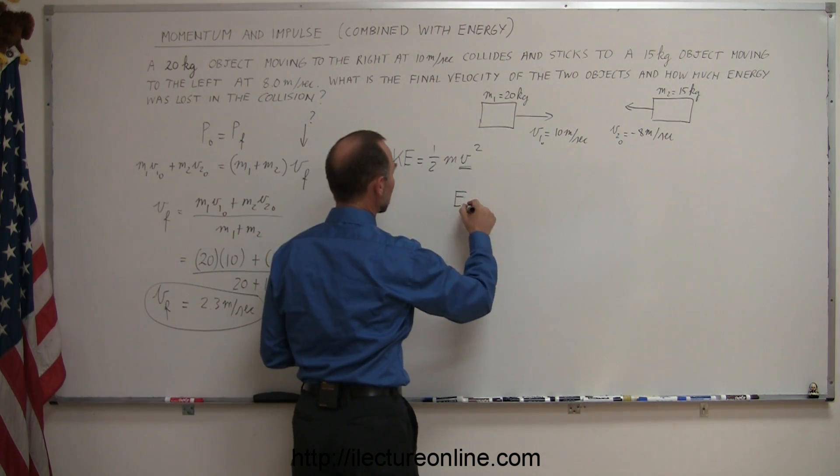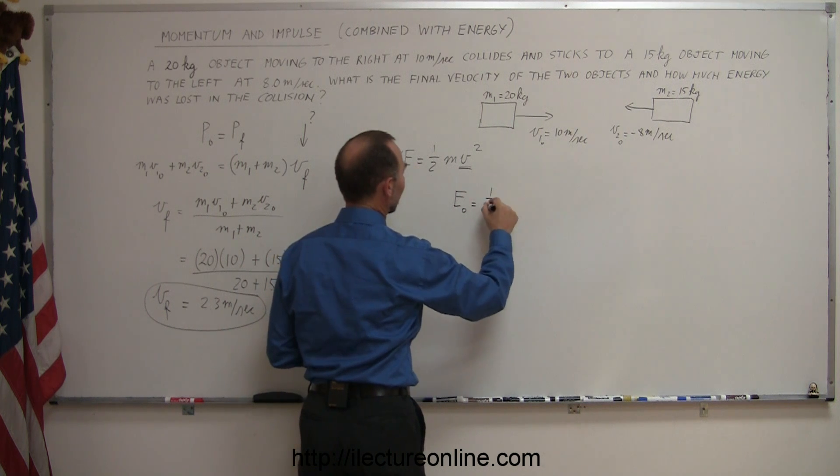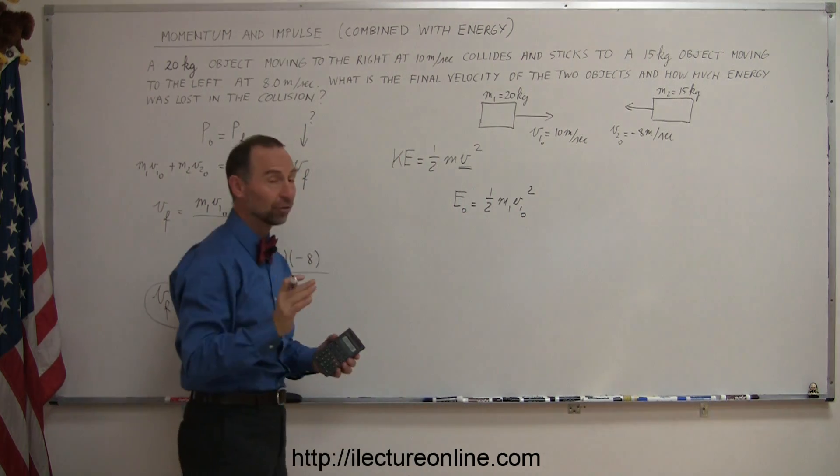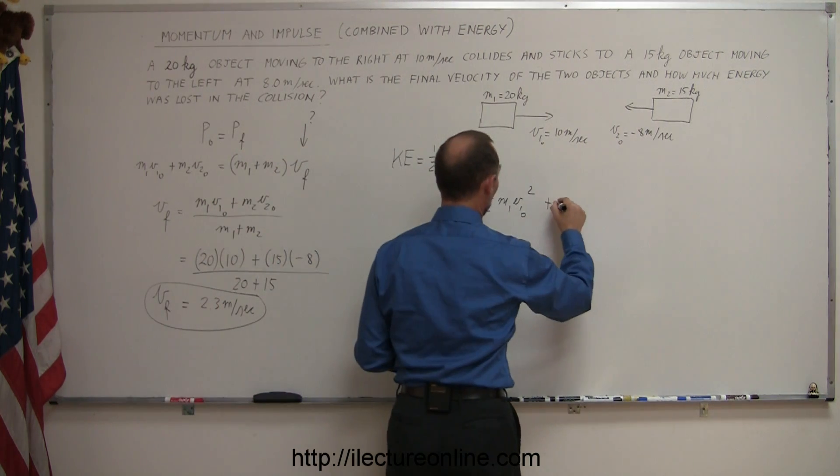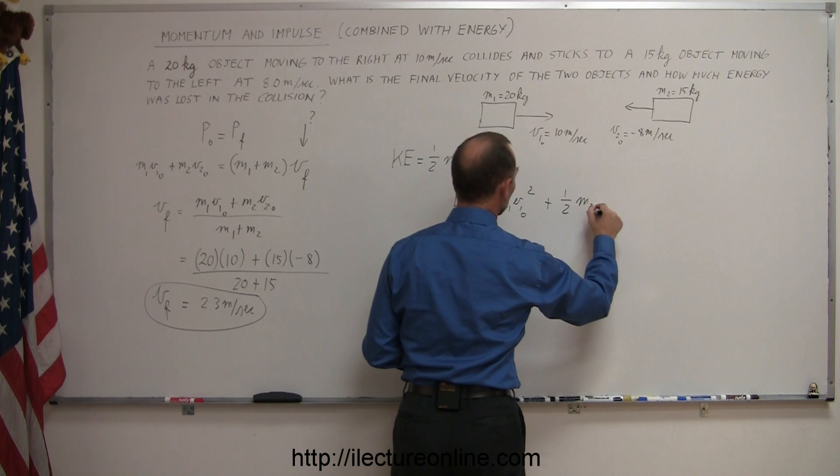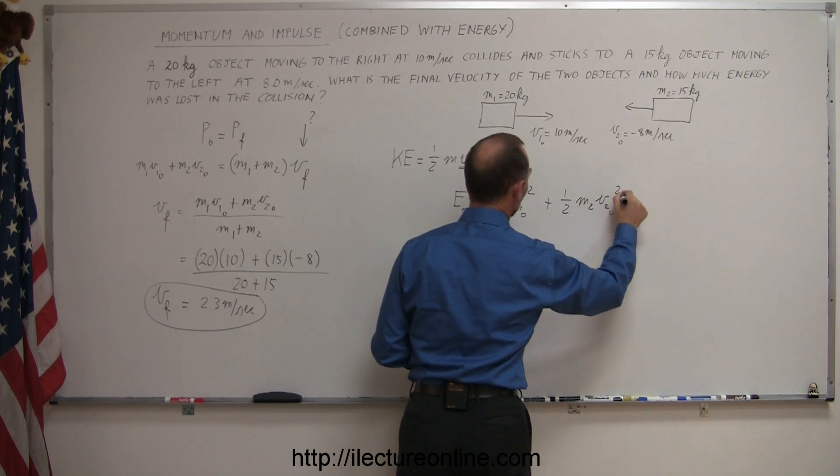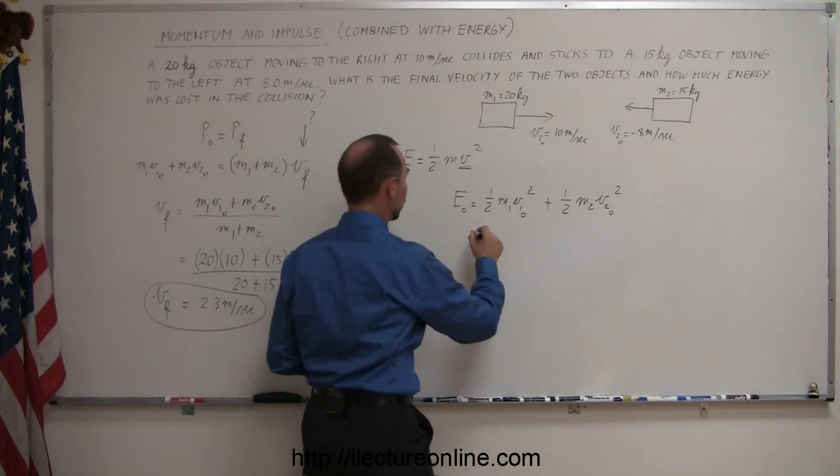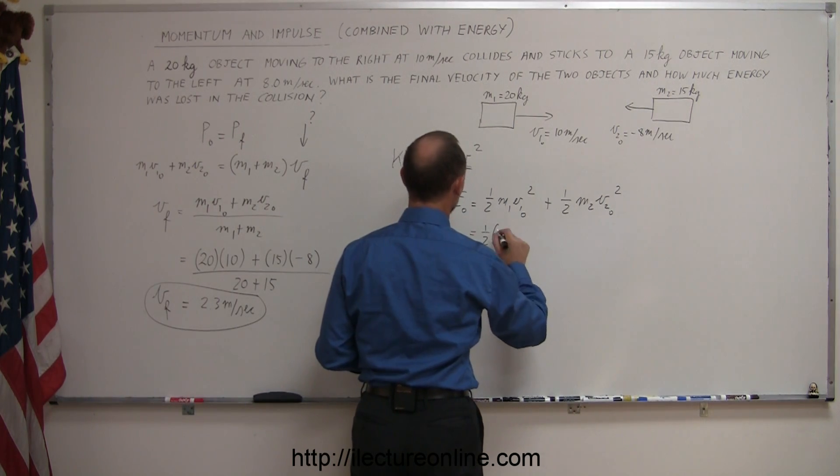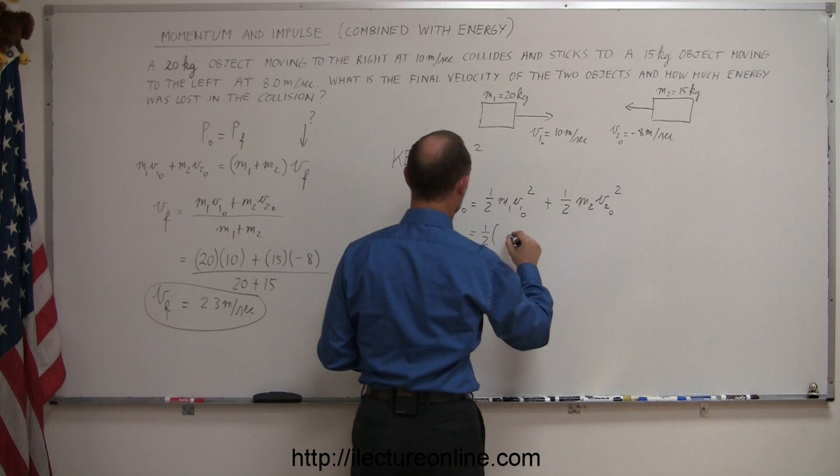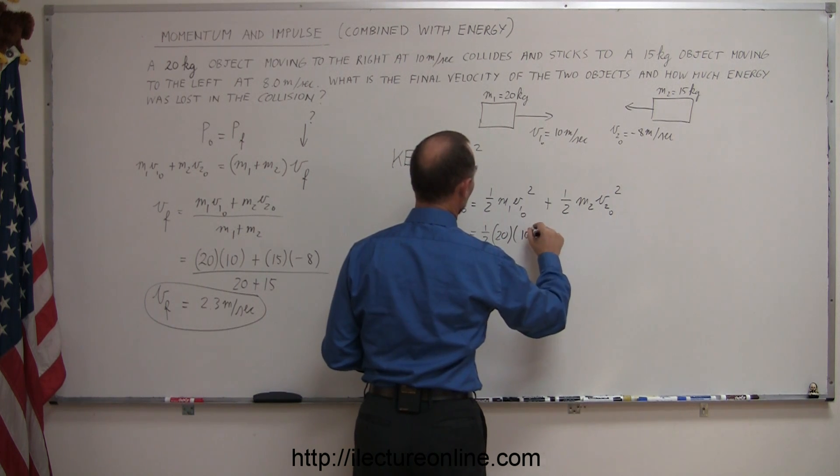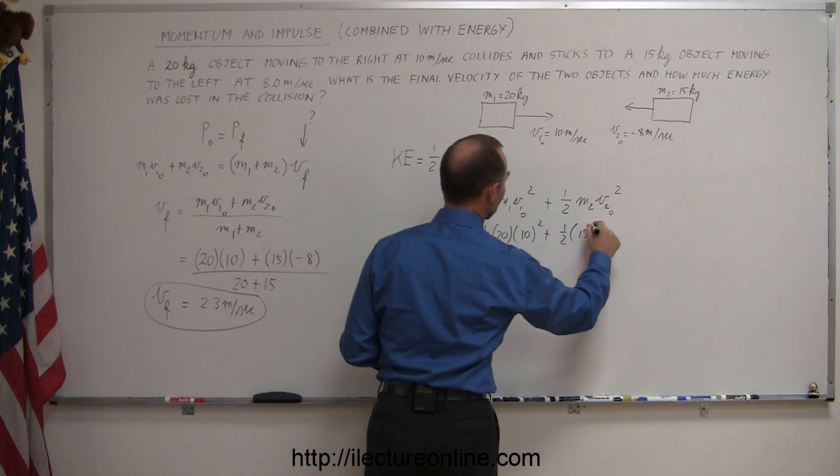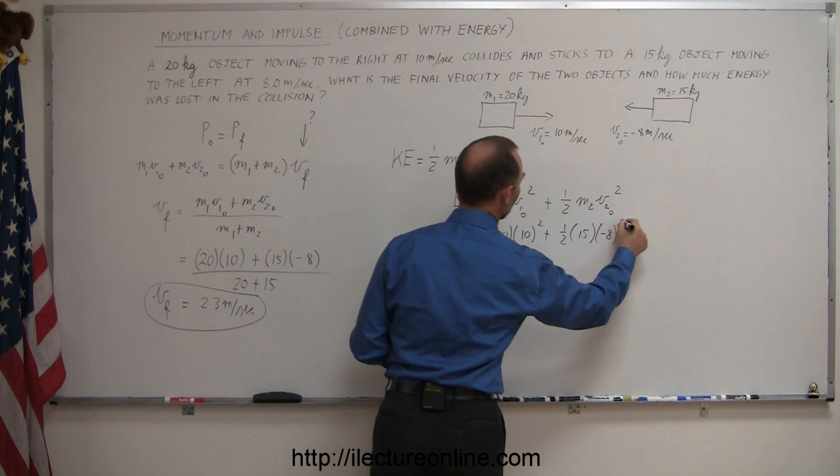So we have to add up the energy before, so energy initially is equal to one-half m1 v1 initial squared, so that would be the kinetic energy of the first object, plus one-half m2 v2 initial squared. So that will give us the kinetic energy before the collision. So that's equal to one-half times the mass, and again I'm leaving off the units for clarity, 20 times 10 squared plus one-half times 15 times the minus 8 squared. And there again, since the velocity is squared, you get a positive quantity out of that.